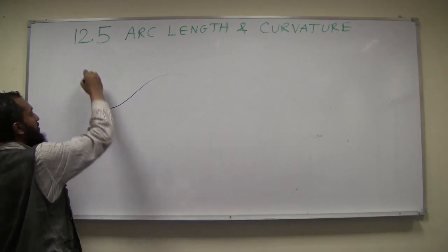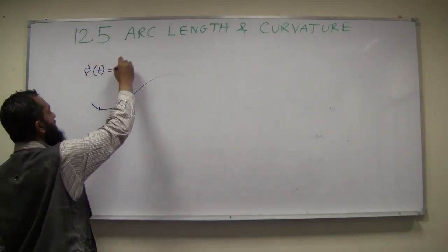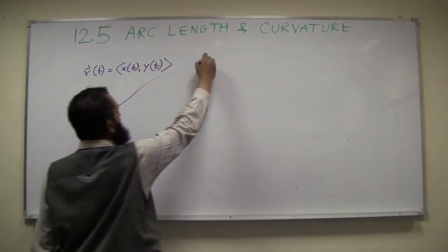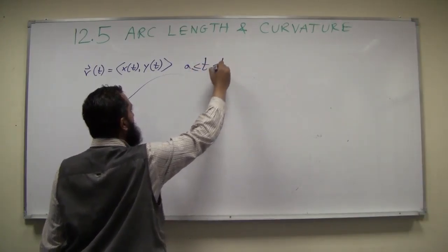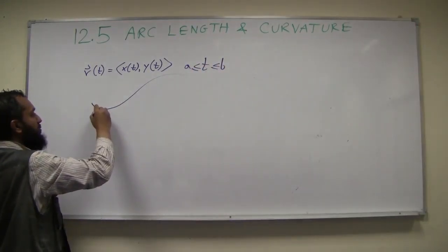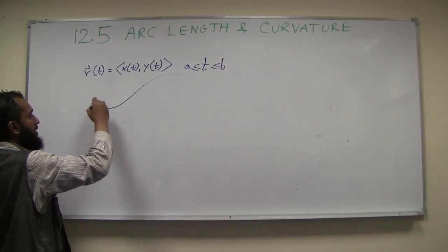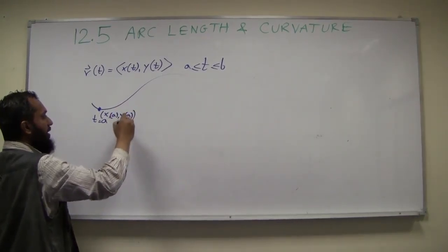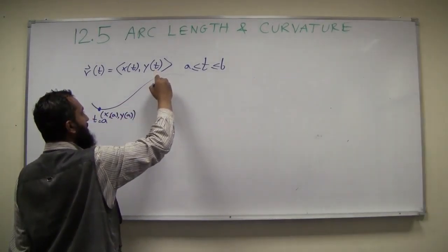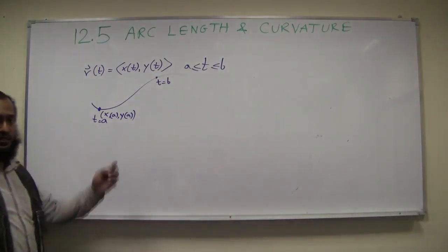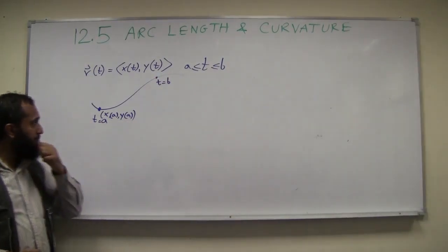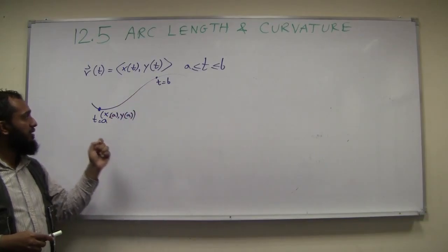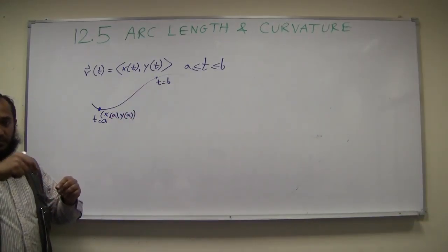So let's say r of t is (x(t), y(t)), and t is between two values a and b. The value corresponding to t = a gives you (x(a), y(a)), and the value corresponding to t = b gives you (x(b), y(b)). Now you have to find the length of this curve, and it's not a straight line so it's not easy to compute directly.